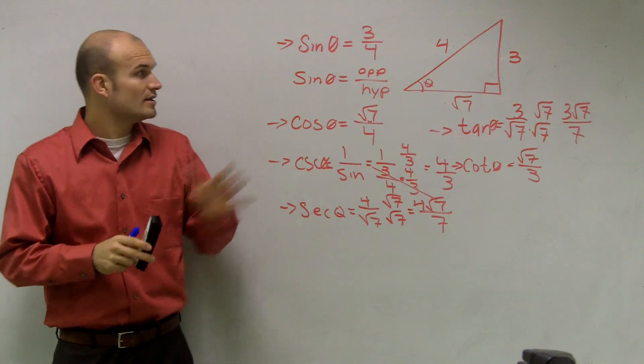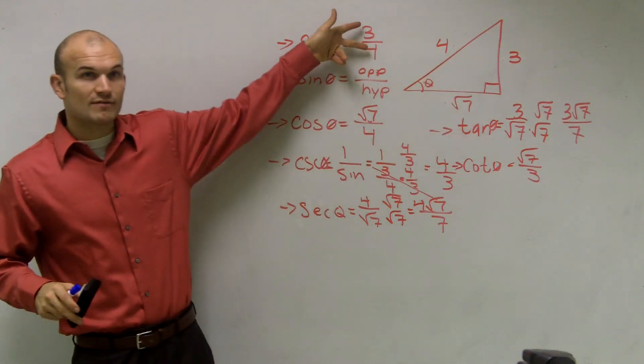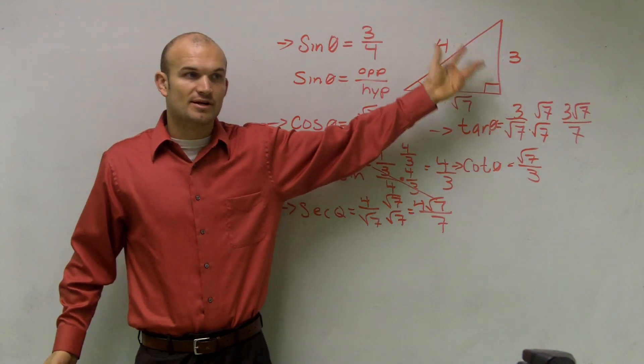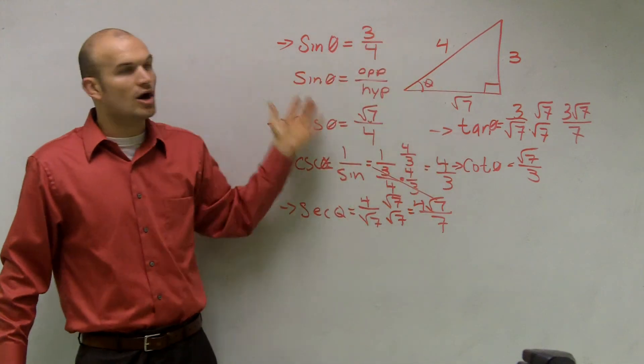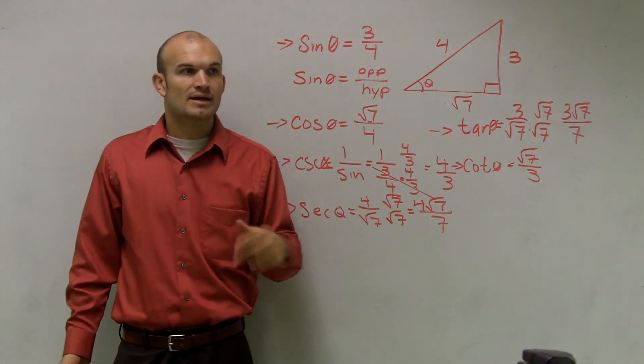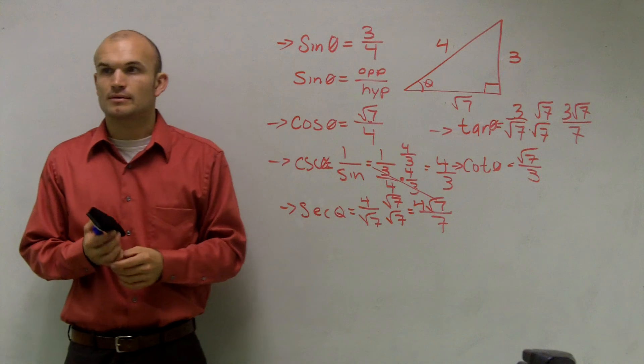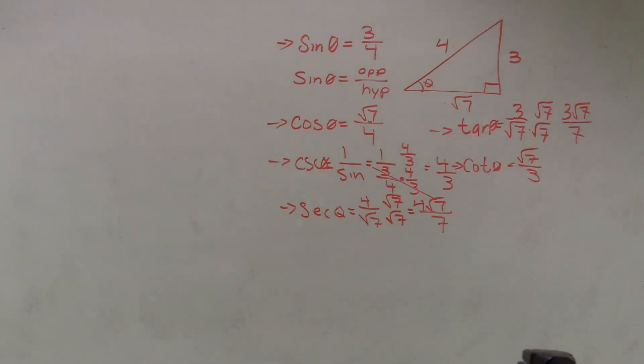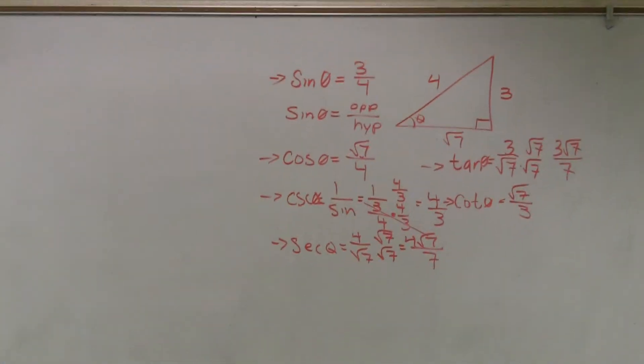So whenever you're given it, and it says to use the right triangle, take whatever you're given, fill in the sides, and then use Pythagorean theorem to find your missing side, and then all it is is just knowing what your sine, cosine, and tangent represent, and then the reciprocals. Okay? Do you guys remember what sine, cosine, tangent?